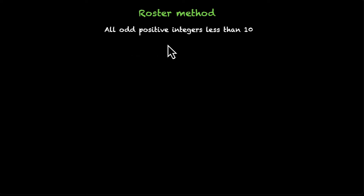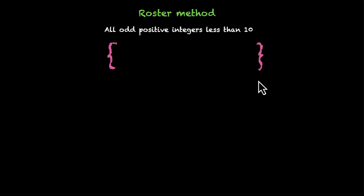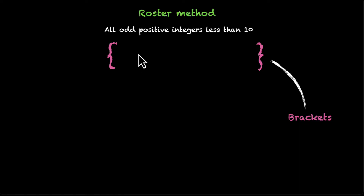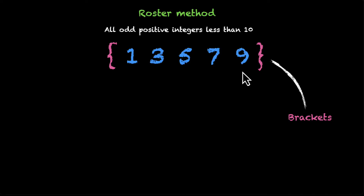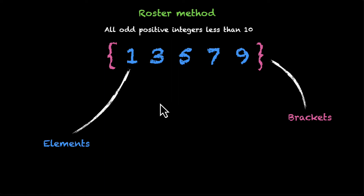Roster method first. Let's say we're looking for all odd positive integers less than 10. The first thing we need to do is put curly brackets, and we put our answer between these brackets. We have odd positive integers: 1, 3, 5, 7, and 9. No more than that because we want integers less than 10. We call these elements and we separate them with commas.